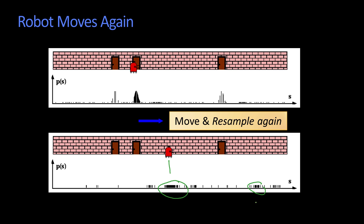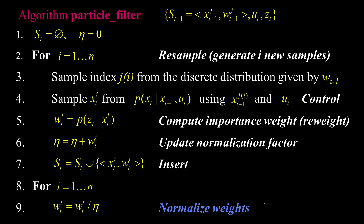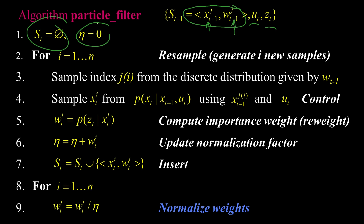Algorithmically, it's pretty straightforward to do this. We start off at any point in time with a set of particles from the last time step. Each particle has a state, like its position, and a weight. We're also going to be given a new action, like take a step to the right two meters, and we're going to take a new measurement. Here's how the particle filter runs: we start off with a new set of particles empty and a normalization constant of 0.